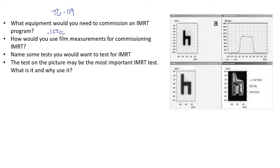You should know this very well: use three percent, three millimeter — get it as best as you can. Ideally you want 95% or more of points passing when you do that gamma analysis.